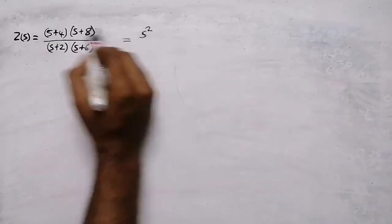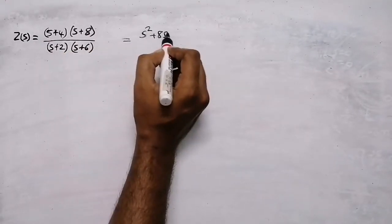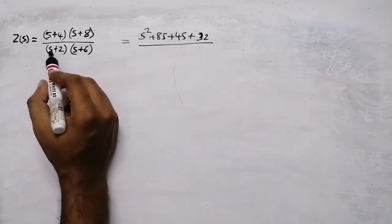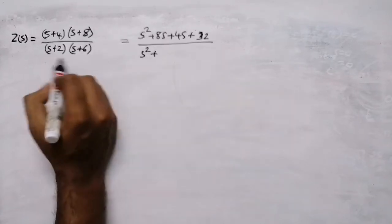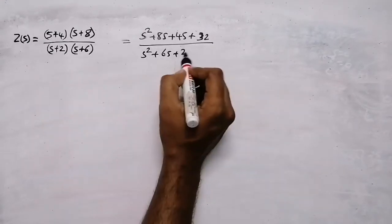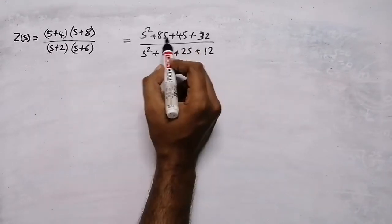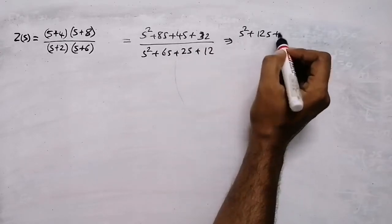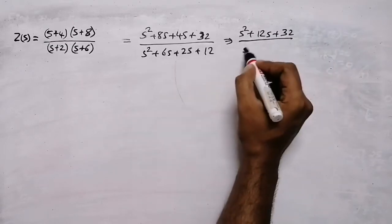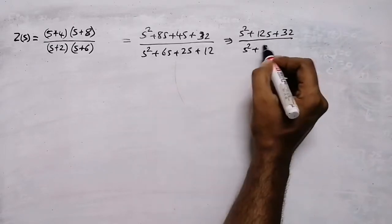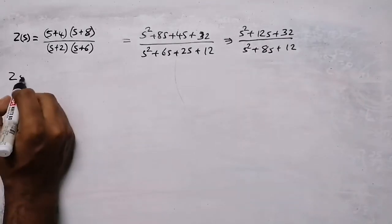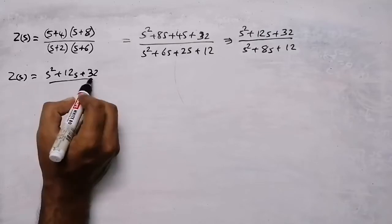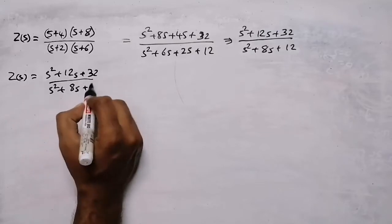Expanding the numerator: s×s = s², s×8 = 8s, 4×s = 4s, 4×8 = 32. Expanding the denominator: s×s = s², s×6 = 6s, 2×s = 2s, 2×6 = 12. Combining like terms: 8s + 4s = 12s, and 6s + 2s = 8s. So the final impedance equation is Z(s) = (s² + 12s + 32) / (s² + 8s + 12).